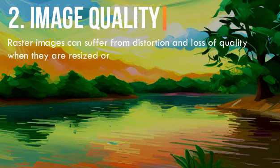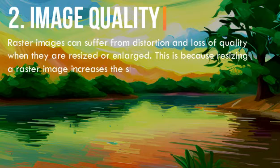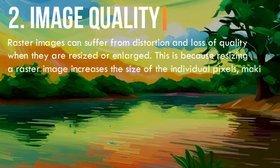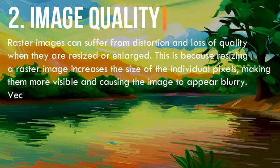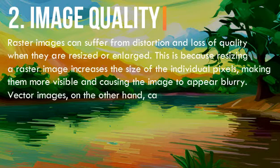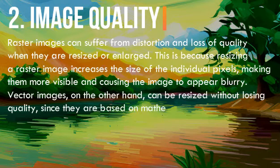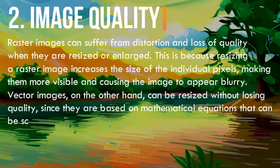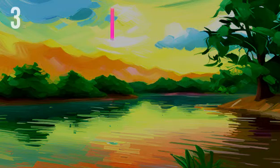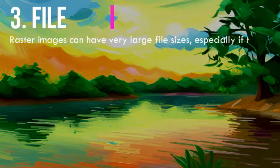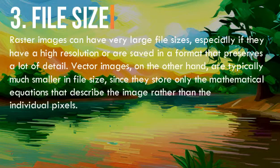2. Image quality: Raster images can suffer from distortion and loss of quality when they are resized or enlarged. This is because resizing a raster image increases the size of the individual pixels, making them more visible and causing the image to appear blurry. Vector images, on the other hand, can be resized without losing quality, since they are based on mathematical equations that can be scaled up or down without affecting the sharpness of the image.